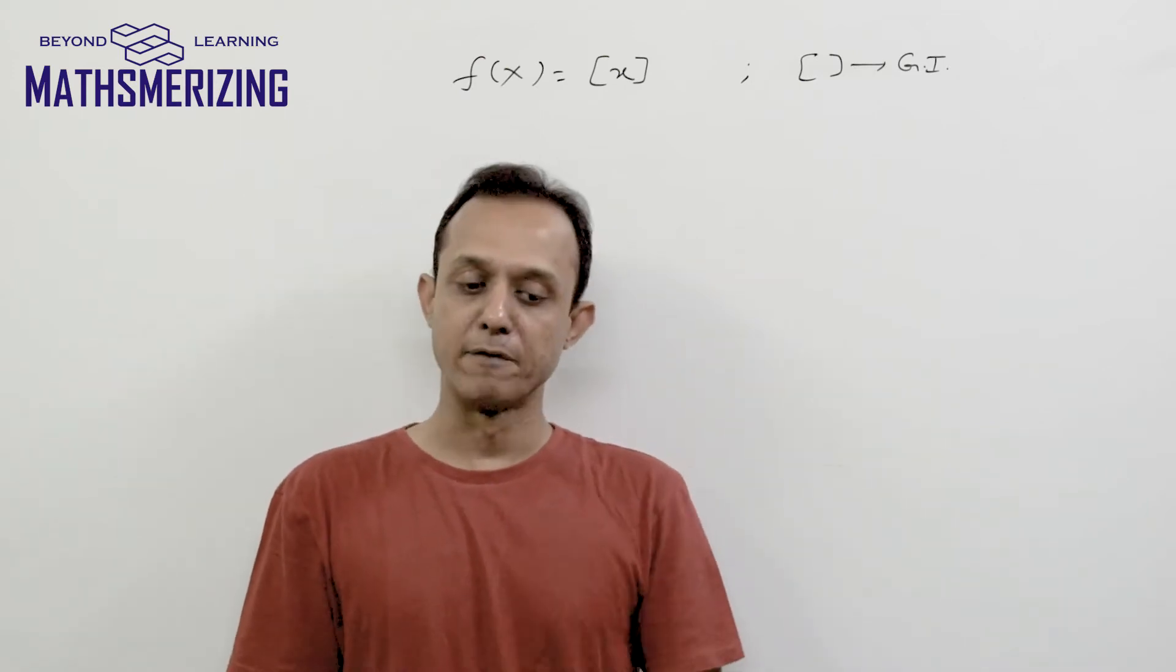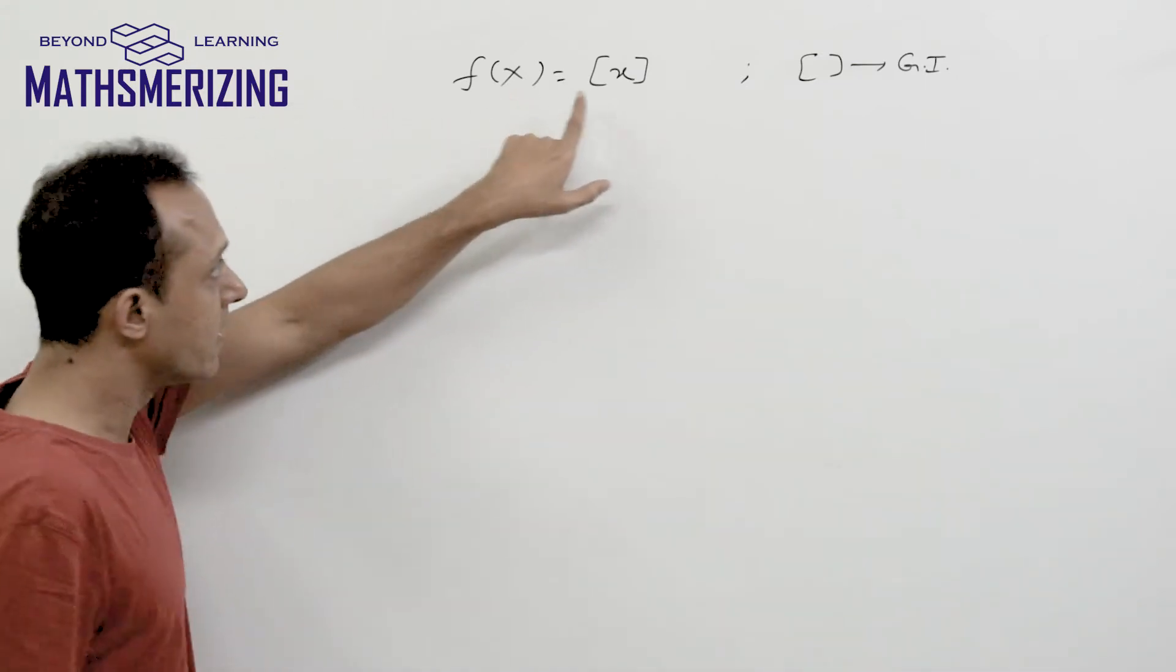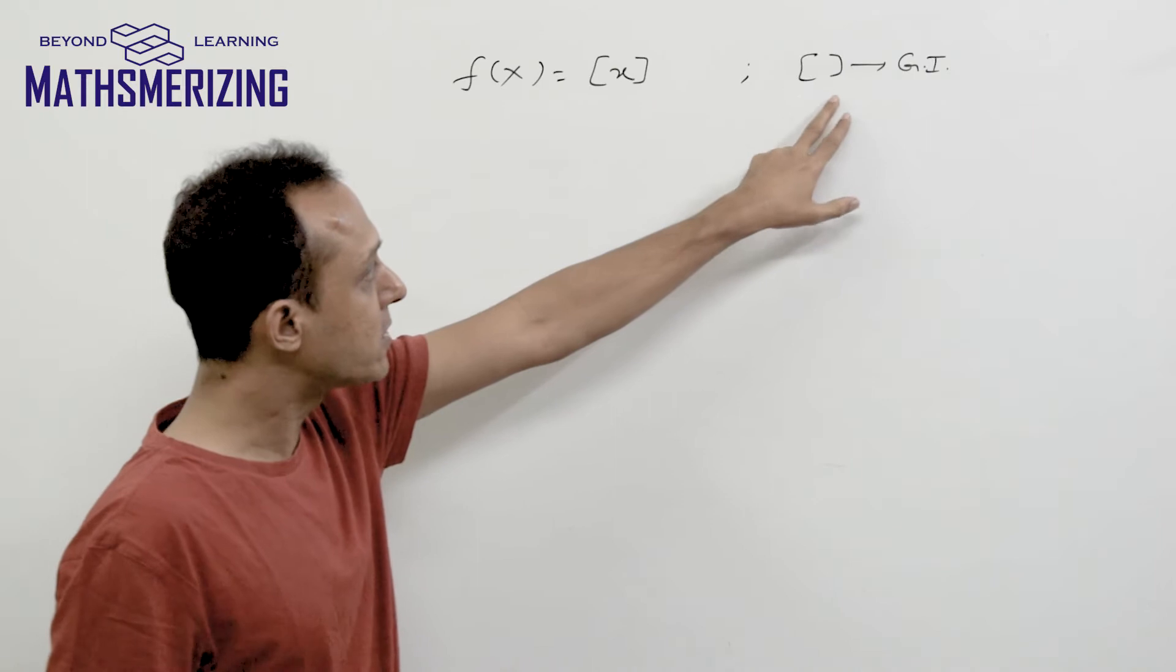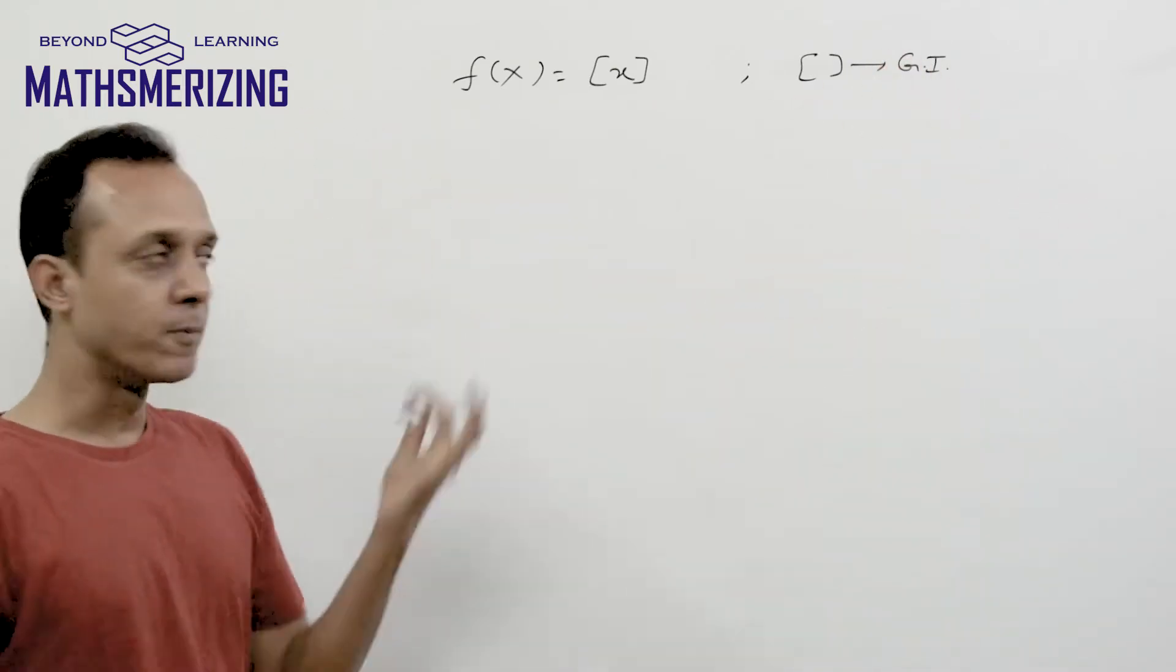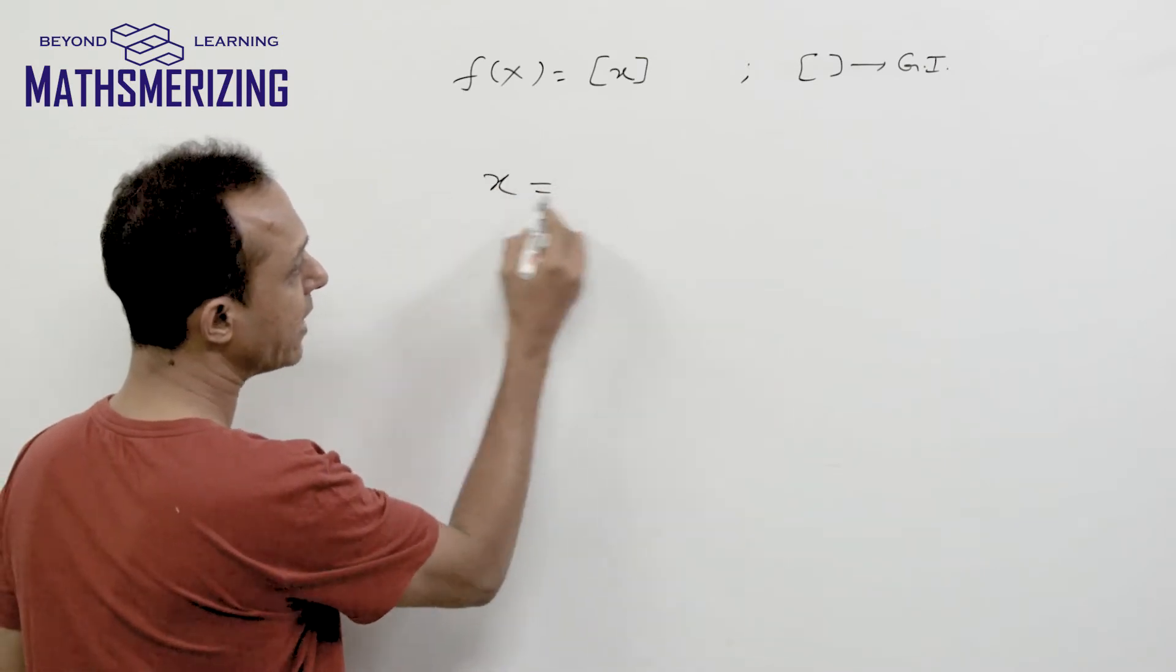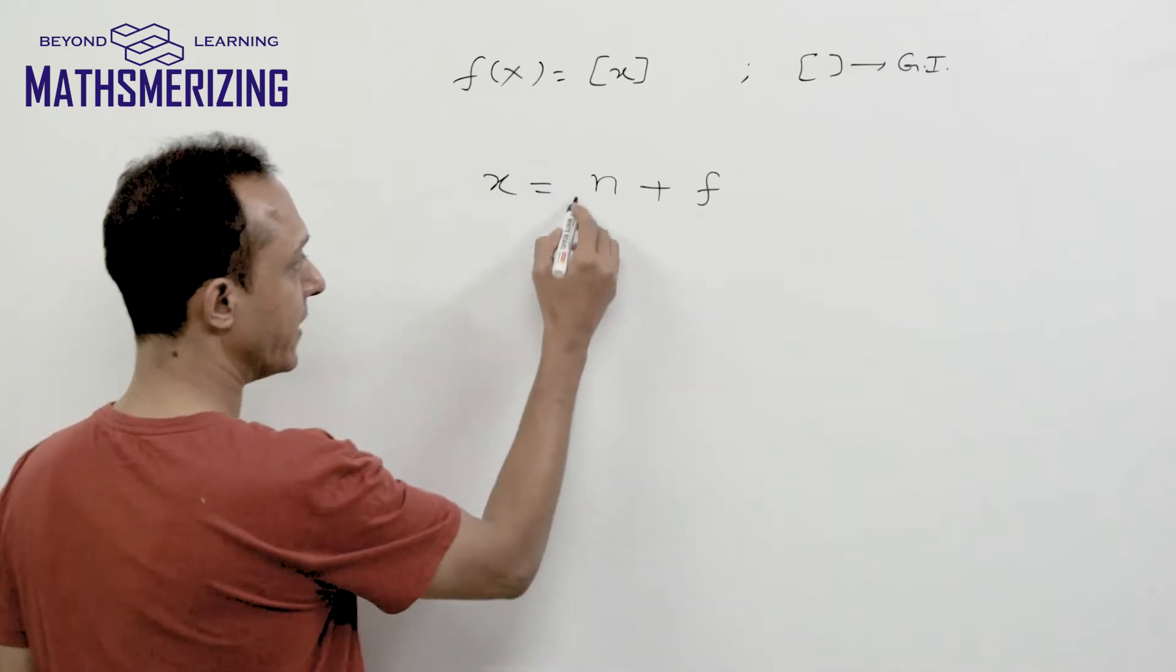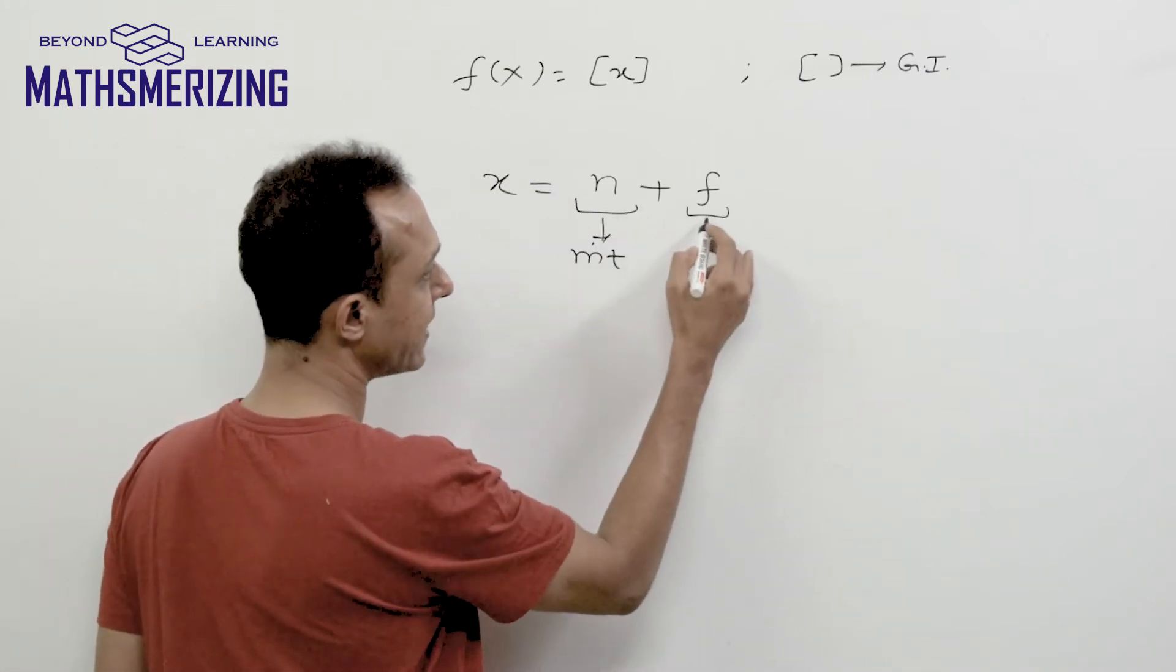The greatest integer function f(x) looks like f(x) equals the square bracket x. In any standard text, they'll mention specifically these boxes represent greatest integer function. What does this function do? Suppose I have any number x, I can express any number x as sum of its integral part plus its fractional part.